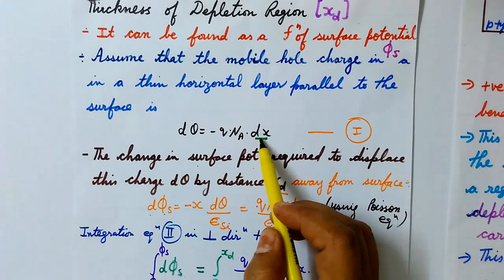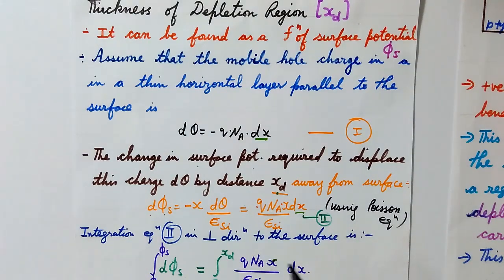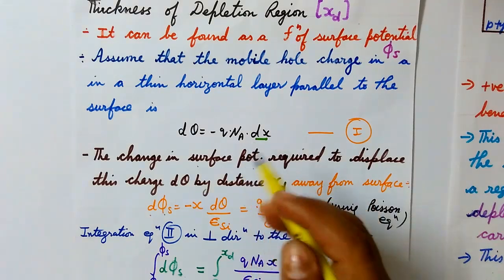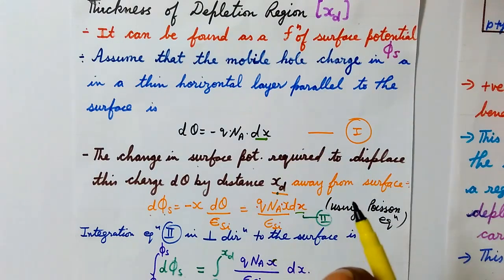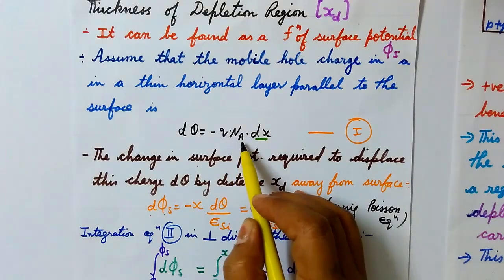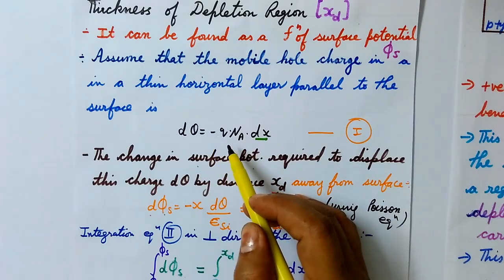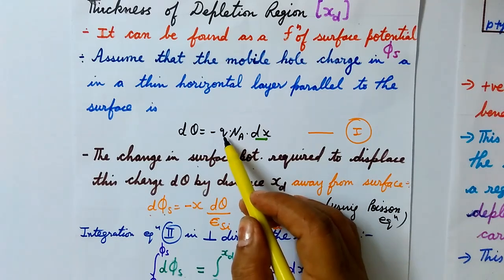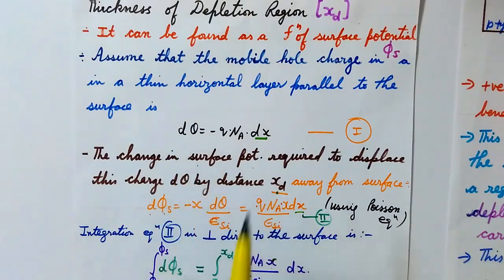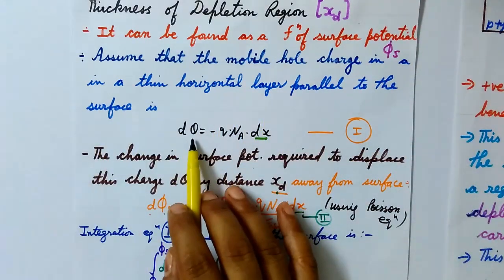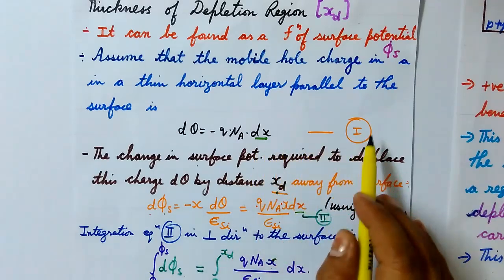In that thin region of thickness dx, the number of holes that have moved away equals the number of acceptor ions, because if one hole moves away it leaves behind one negatively charged acceptor ion. So the small charge present in the thin horizontal layer parallel to the surface is dQ, and it equals minus q·NA·dx. Let's take this as equation number one.